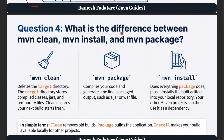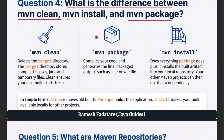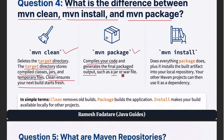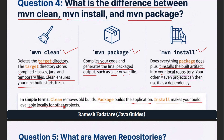Question 4: What is the difference between mvn clean, mvn install, and mvn package? This question appears in nearly every interview, so here is a clean explanation. mvn clean deletes the target directory — the target directory stores compiled classes, JARs, and temporary files — ensuring your next build starts fresh. mvn package compiles your code and generates the final package output such as a JAR or WAR file. mvn install does everything package does, plus it installs the built artifact into your local repository so your other Maven projects can use it as a dependency. In simple terms: clean removes old builds, package builds the application, install makes your build available locally for other projects.